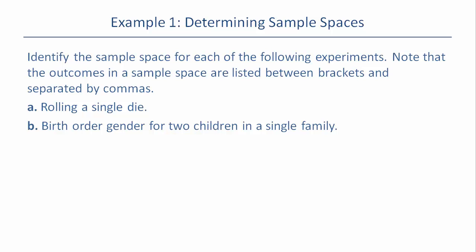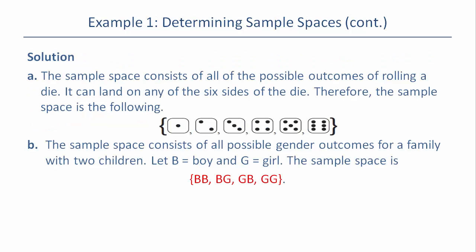Rolling a single die gives a sample space of one through six. For birth order gender of two children in a single family, you have boy-boy, boy-girl, girl-boy, and girl-girl. Boy-girl and girl-boy are different because boy-girl means the first child was a boy and the second was a girl, versus girl-boy where it's reversed. Oftentimes order matters with these types of things.